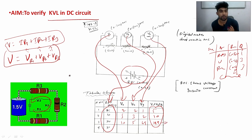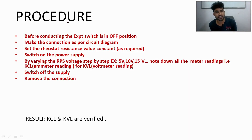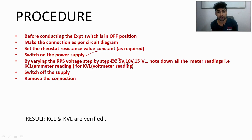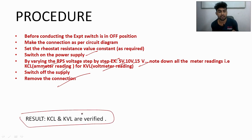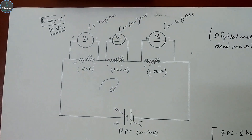A common question: why do we do this experiment? KVL is used to measure how much voltage drops across each electrical component. Procedure: before conducting the experiment, switch off the supply. Make connections as per the circuit diagram. Set the rheostat resistance to a constant value. Switch on the power supply and vary the RPS voltage step by step — 5V, 10V, 15V. Note down all voltmeter readings. Switch off the power supply, remove connections, and write the result: KVL is verified.